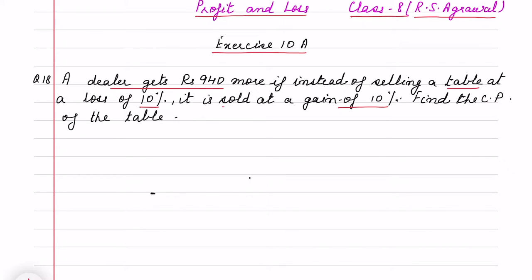So there are two scenarios - one is loss of 10% and another is gain of 10%. When he is selling at the gain of 10%, he gets 940 rupees more. We have to find out the cost price of the table.